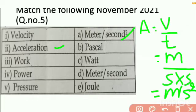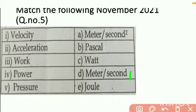Therefore velocity will be meter per second, acceleration is meter per second square, and work SI unit will be joule, power means watt, and pressure answer will be Pascal.